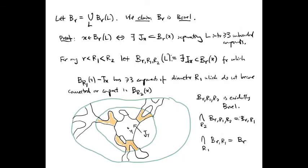Now let B sub r be the union over all leaves l of B sub r of l. We claim that B sub r is Borel. Here's the proof. For a point x to be in B sub r of l means that there's a set j sub x contained in the ball of radius r around x, which separates l into at least three unbounded components. The trouble is, this is hard to witness in a compact subset of l, and therefore its dependence on leaves of l might vary unpredictably. So we need to quantify the meaning of separating l into at least three unbounded components.